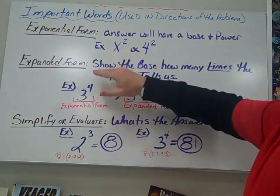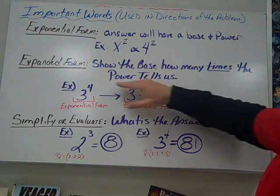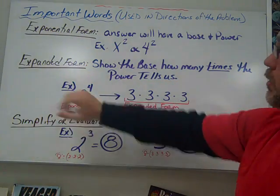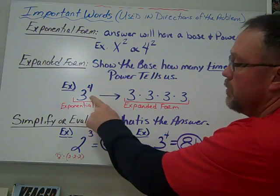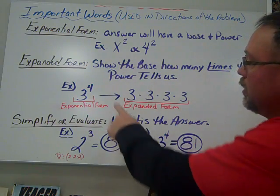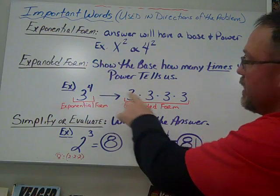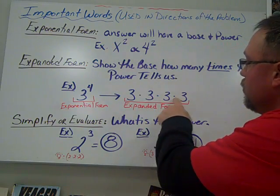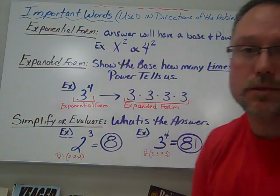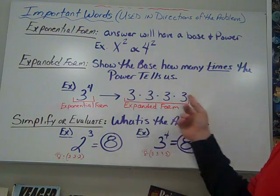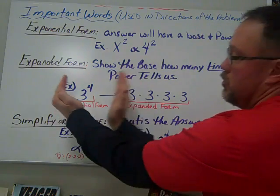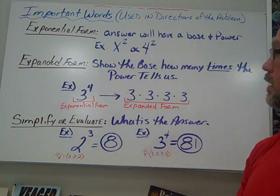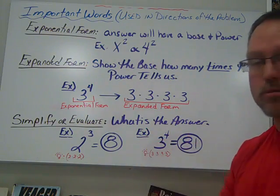Expanded form shows the base how many times the power tells us. So the word times is important. Our example would be we have one that's in exponential form, three to the fourth. We expand that and say that we are going to show each of the bases four times. And we're multiplying, or the word times come into play here, three or four times. So short form, longer form, expansion, exponential. Exponential is a smaller form.